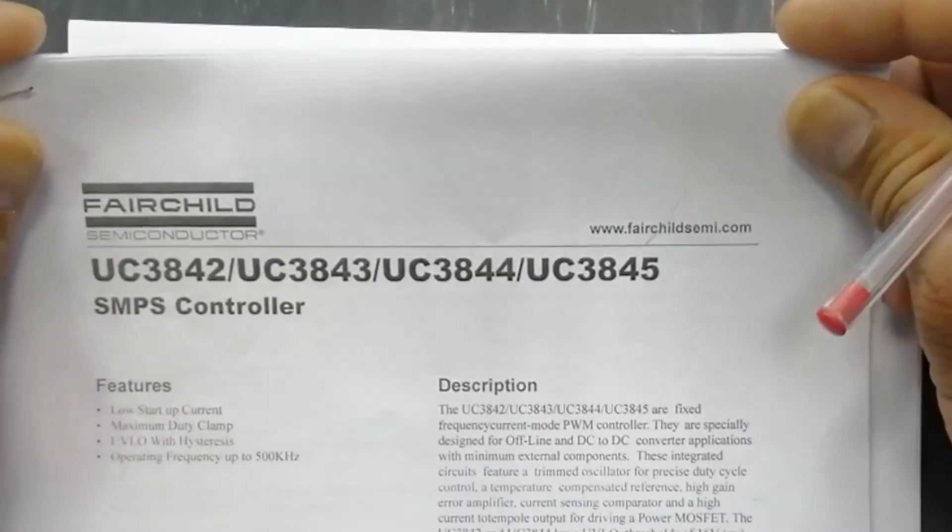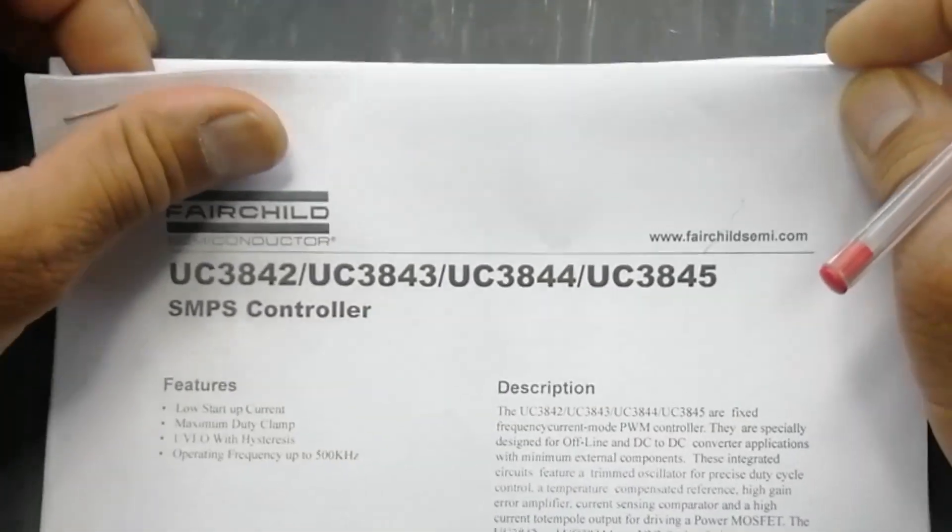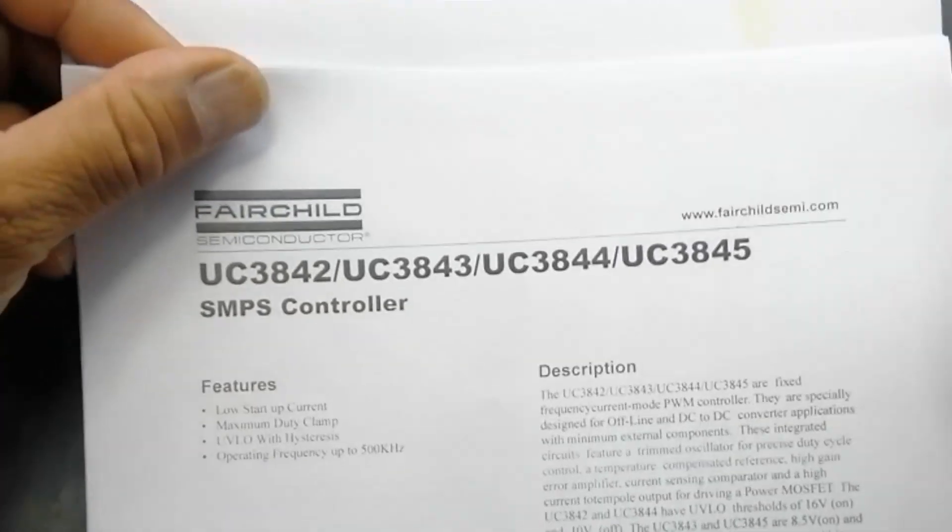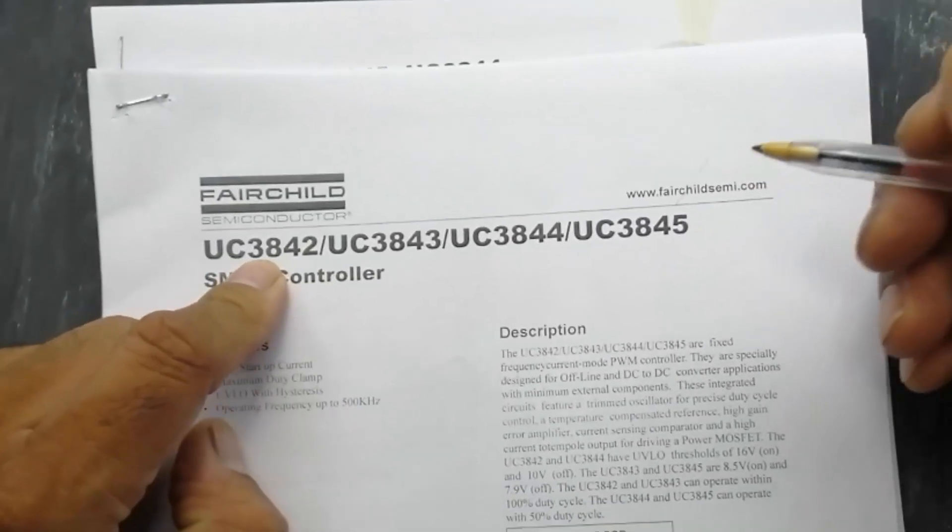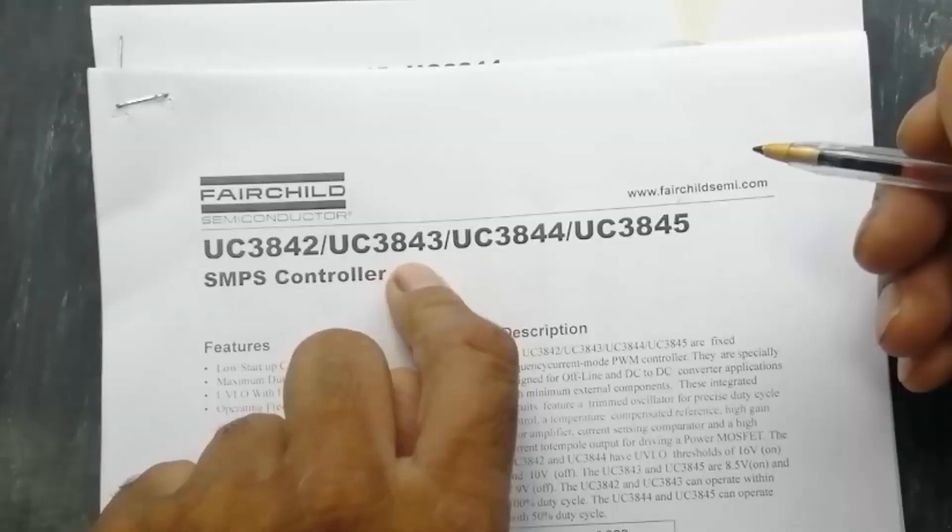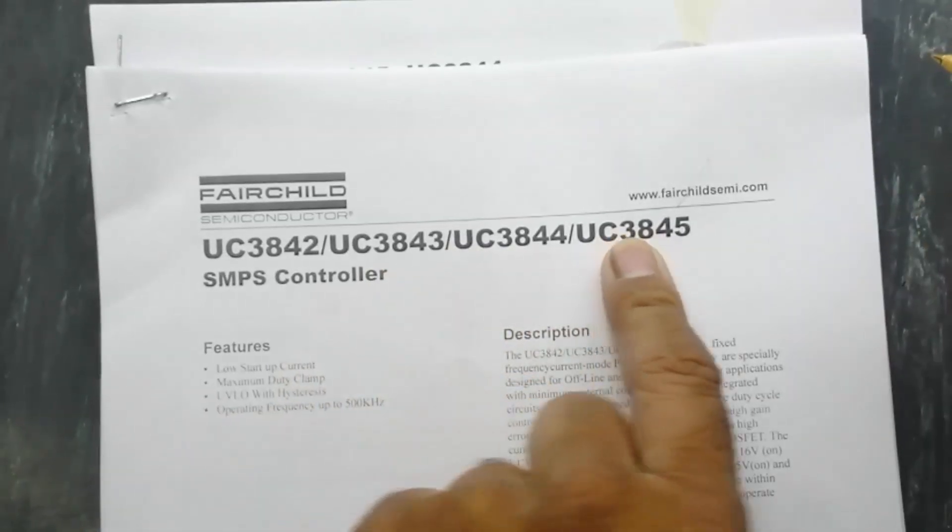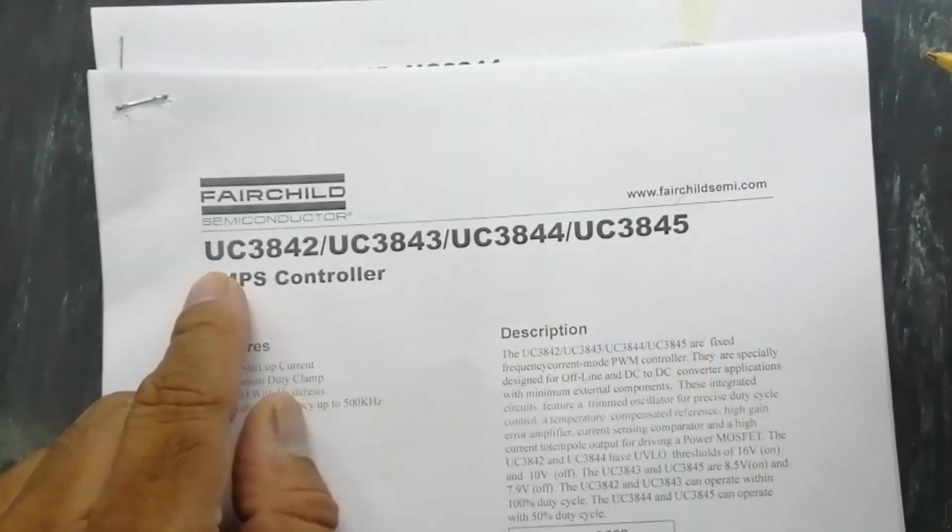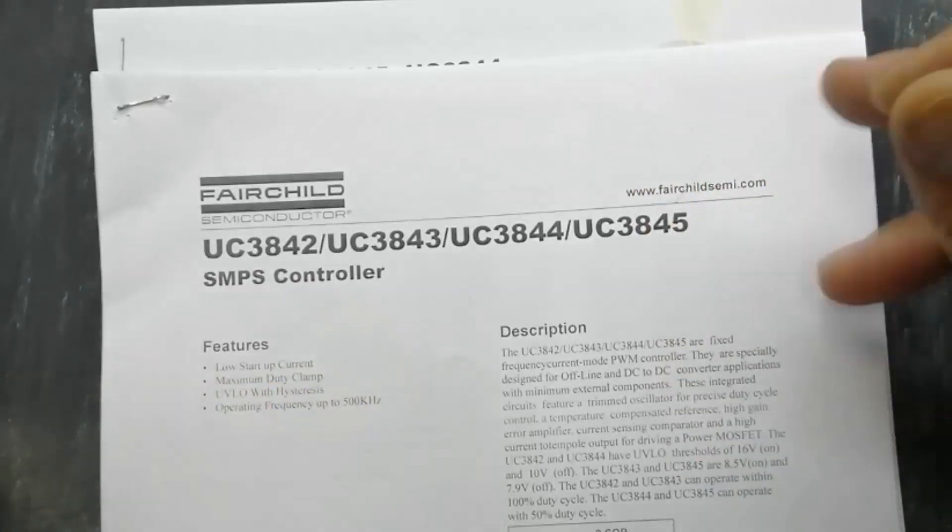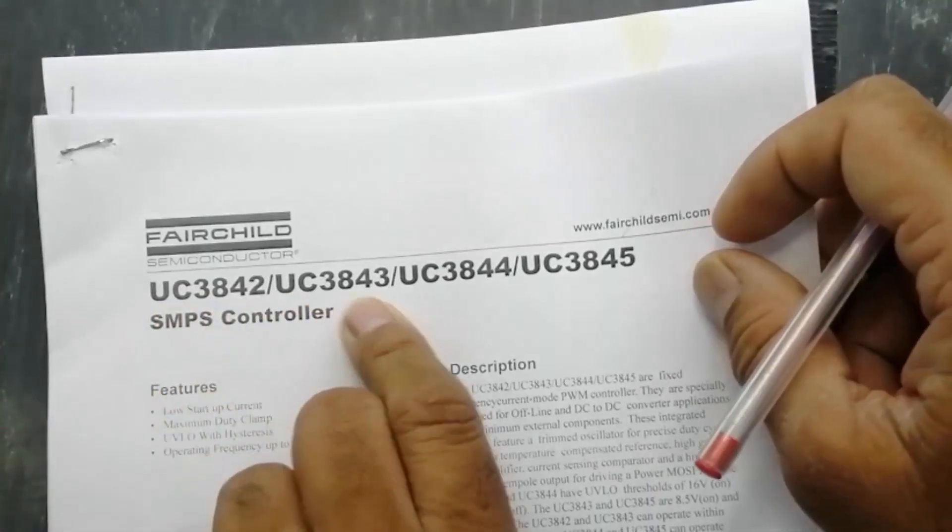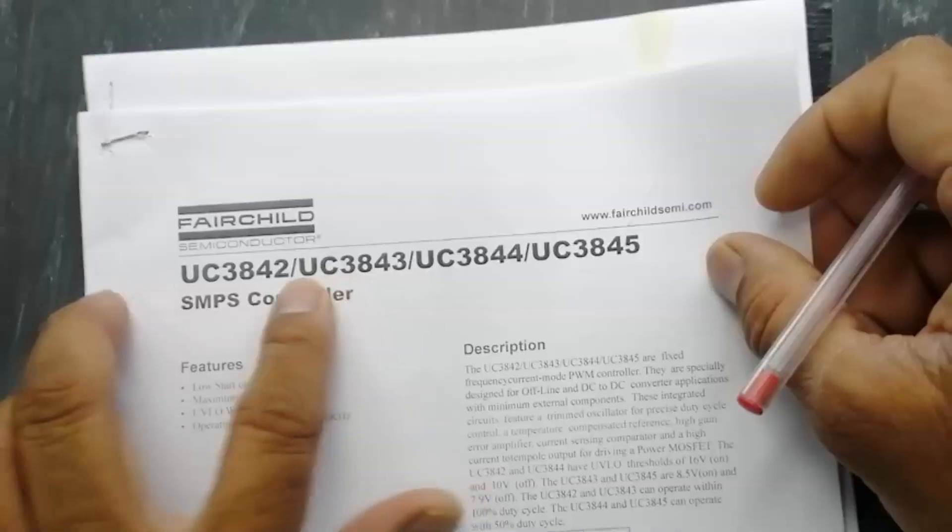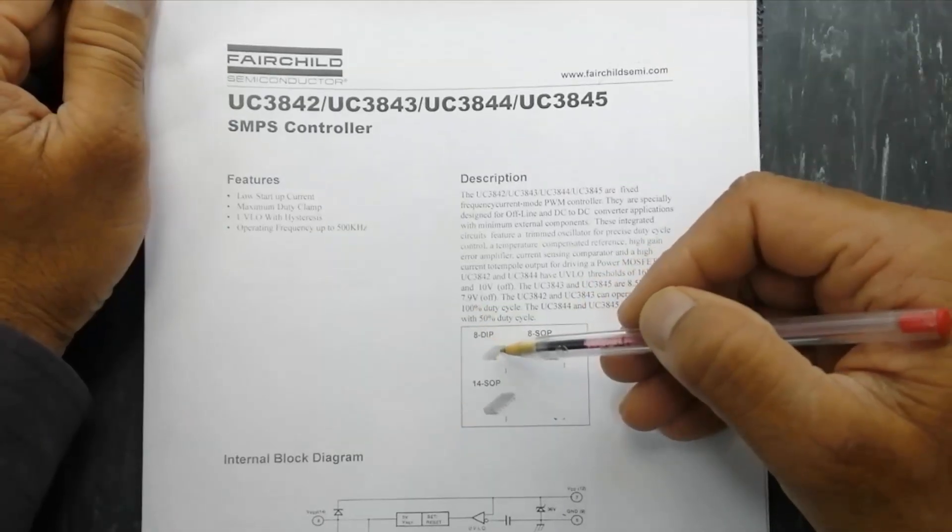Assalamualaikum warahmatullahi wabarakatuhu, welcome to Hasim Electronics. Friends, today we are going to discuss SMPS controller IC 3842, 3843, 3844, and 3845. It will come as UC or MC generic number, like UC 3843. It is a complete family. This IC is available in 8-pin and 14-pin packages.